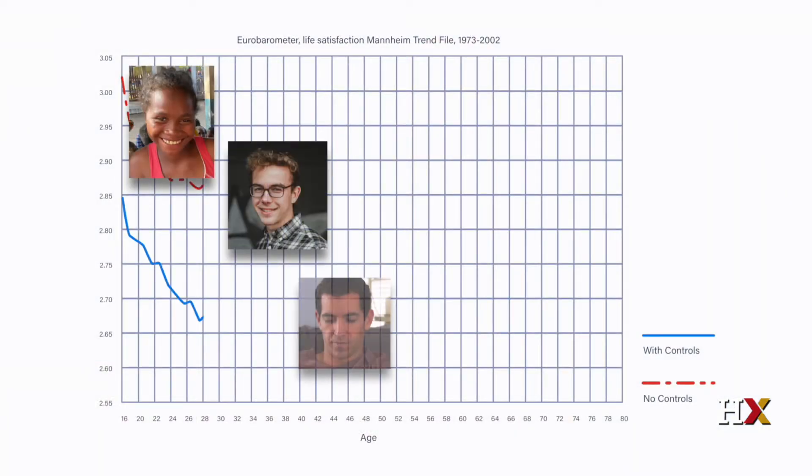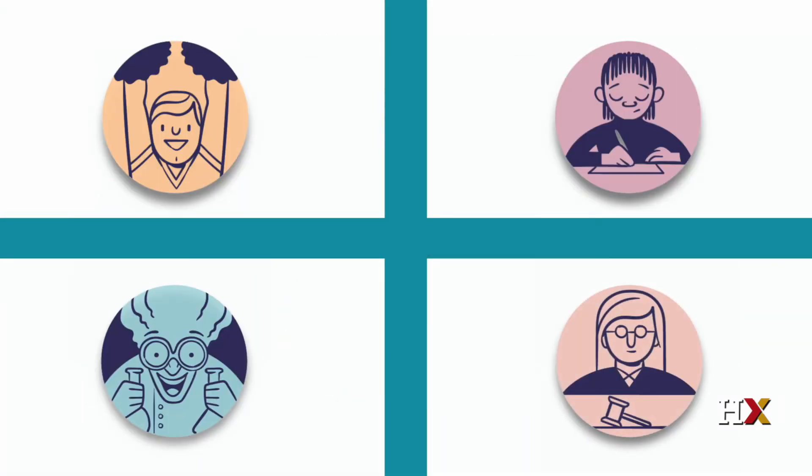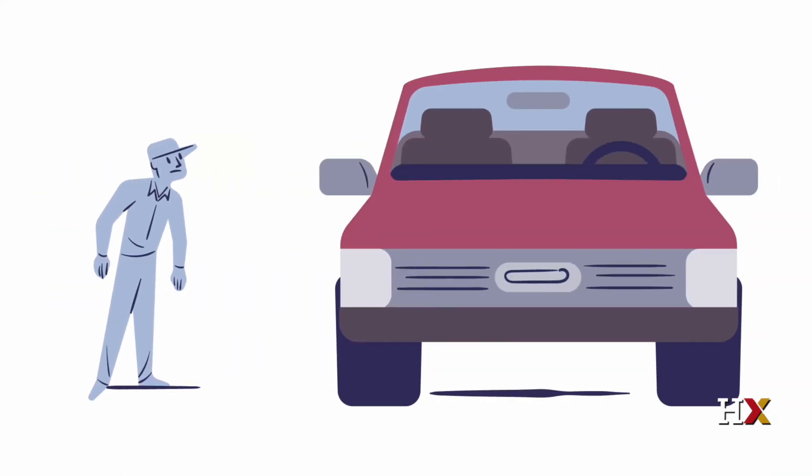It turns out that there's a huge body of science on human happiness. Who has it? What causes it? And the biggest mistakes we all make when we're trying to acquire it.